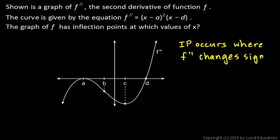But at both of those points, at x equals a and at x equals d, the second derivative has zeros. Now in your mind, you may associate zeros of the second derivative with inflection points. And that would be correct.